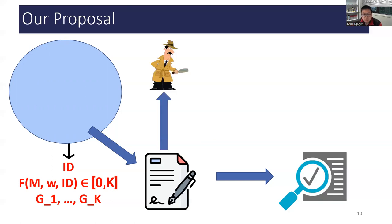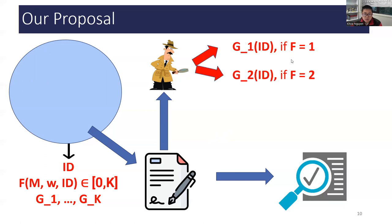So, what can the opening authority learn? If F is equal to 1, then it can learn the function G1 of ID and nothing else. If F is J for some integer J, then it can learn the function GJ of ID and nothing else. The value of F indeed determines which disclosing function will be activated.